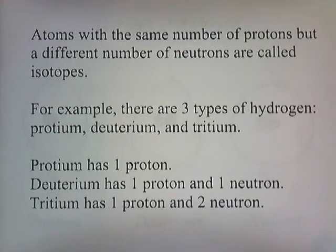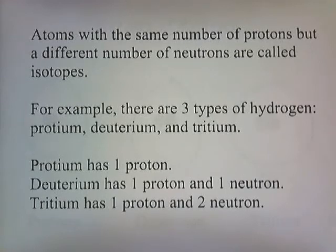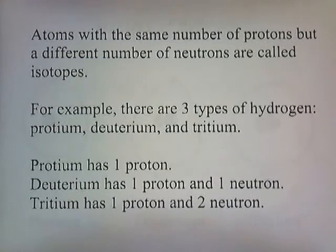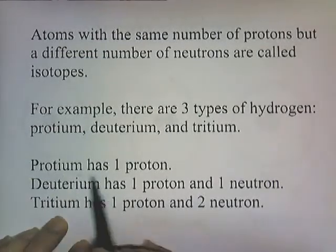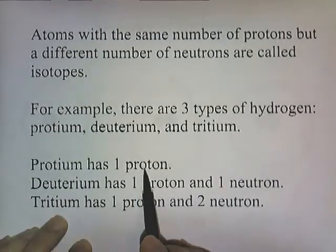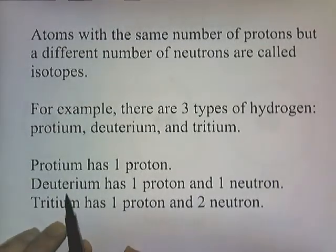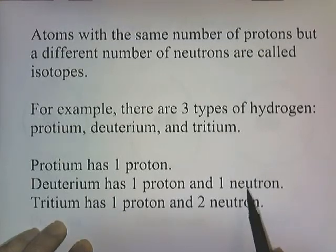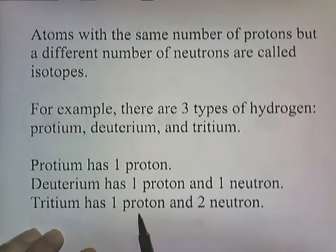Atoms with the same number of protons but a different number of neutrons are called isotopes. For example, there are three types of hydrogen: protium, deuterium, and tritium. Protium has one proton in the nucleus. Deuterium has one proton and one neutron. Tritium has one proton and two neutrons.